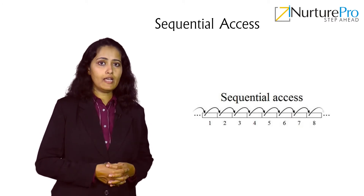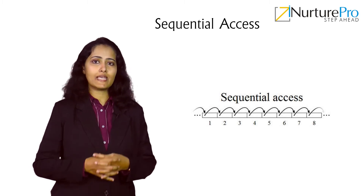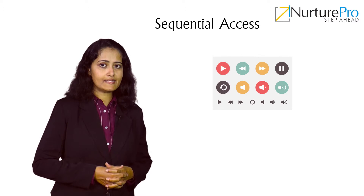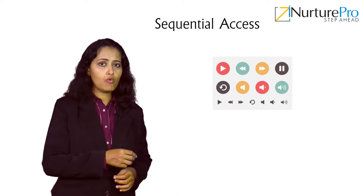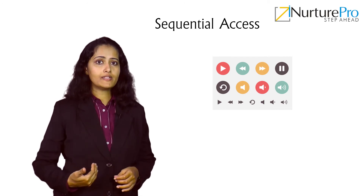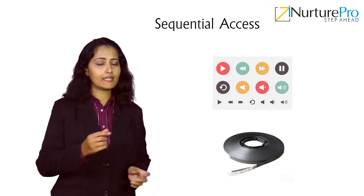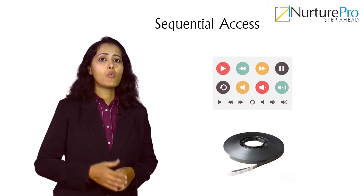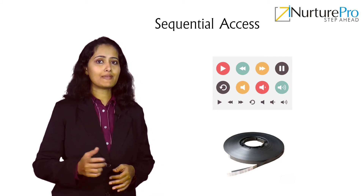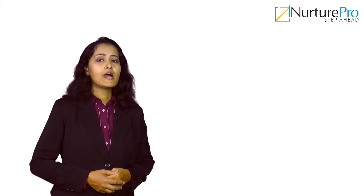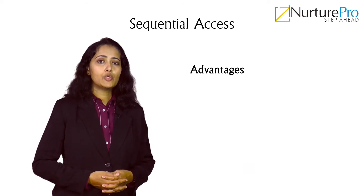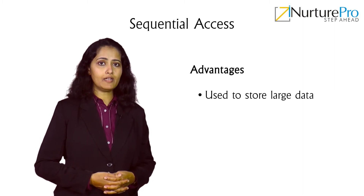In sequential access storage, data and information are stored in a particular order and can be accessed in the same order. An example of serial access is when watching a movie or listening to a song — you can forward or rewind to watch a particular clip again and again. One of the best examples of sequential memory access is magnetic tape.